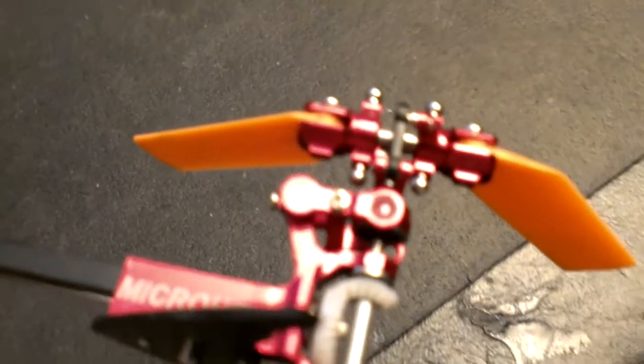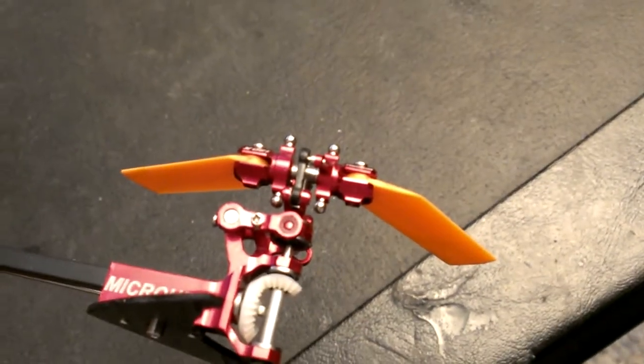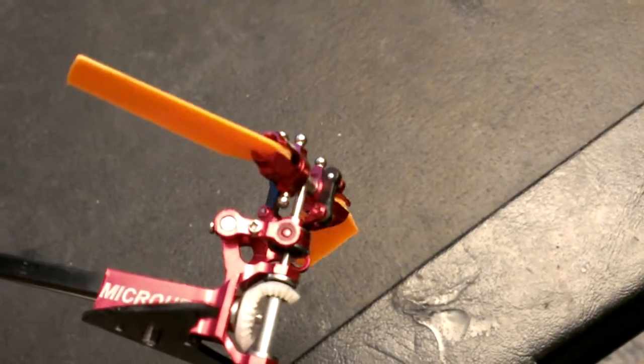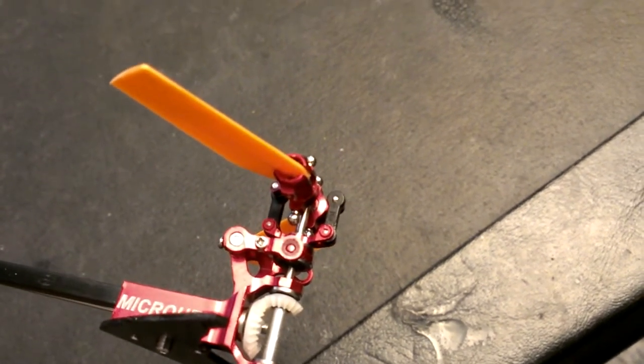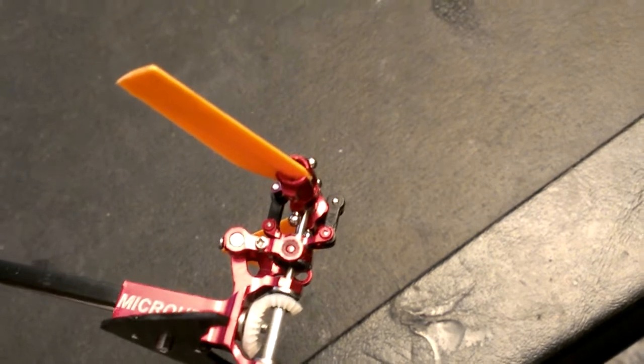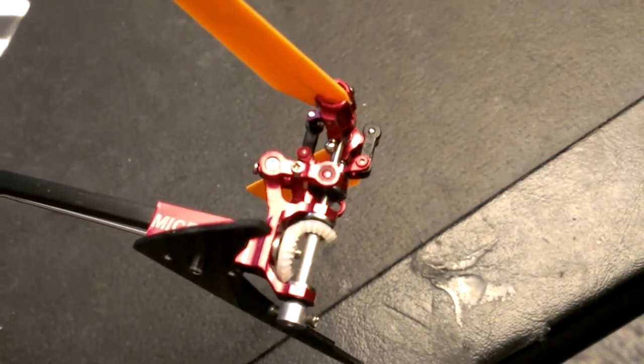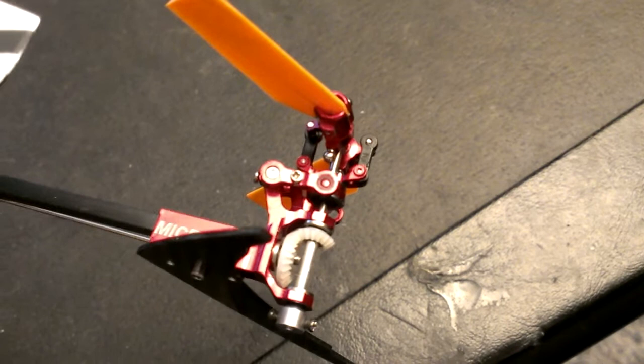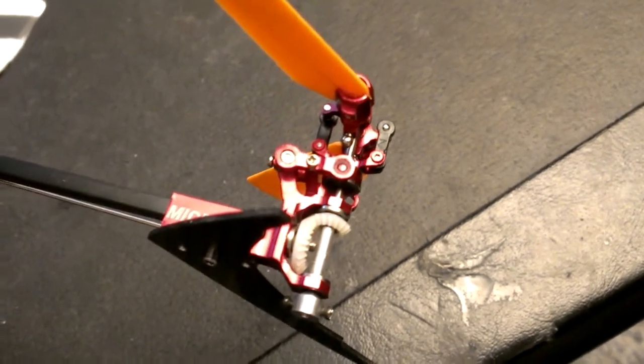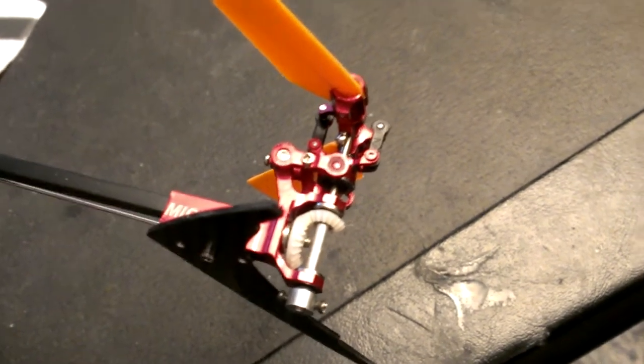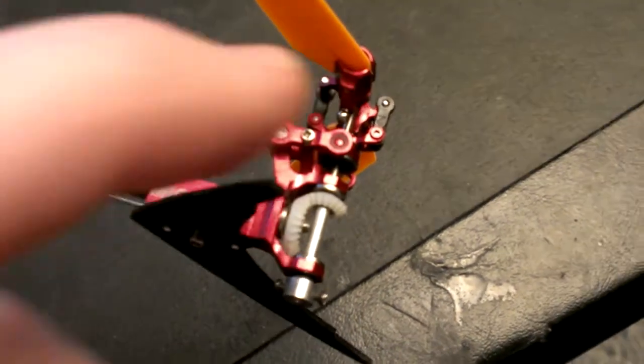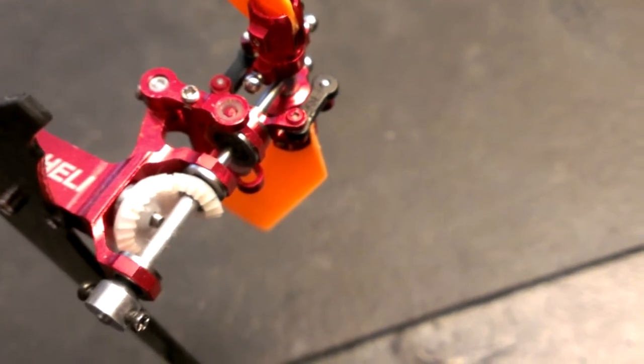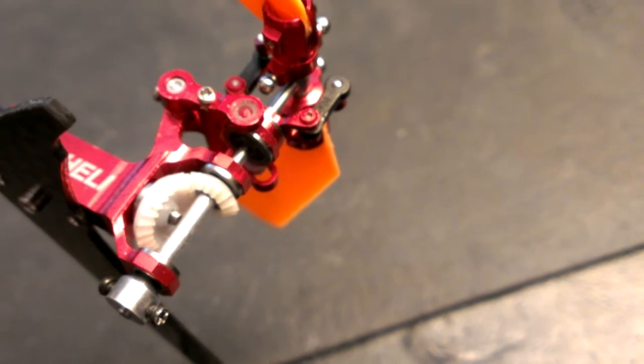I took it all apart and reworked these little plastic links here to make sure that they turned free. And they seem to be in pretty good shape. It does seem to fly a little bit better now. I also noticed the tail pitch slider here seems like it's got a little bit more resistance than it should have.